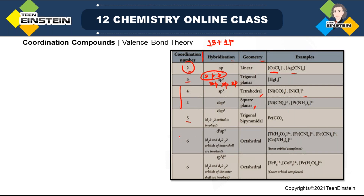For coordination number five we have dsp³ hybridization for trigonal bipyramidal geometry. Another hybridization that comes to mind is sp²d, which you can see in inorganic compounds, but in coordination chemistry for trigonal bipyramidal it is mainly dsp³. One important point: in dsp³, the single d orbital used is of the dx²-y² type. In coordination compounds, mainly two geometries are most common — coordination number four and coordination number six.